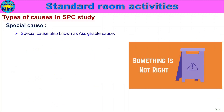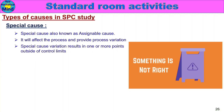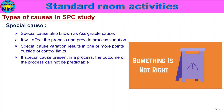Special cause is also known as assignable cause. It will affect the process and provide process variation. Special cause is a major process variation. Special cause variation results in one or more points outside of control limits — either the average value, upper control limit, or lower control limit. These are covered by the 7 rules for control chart.